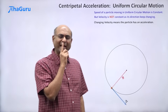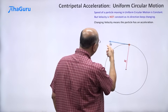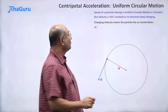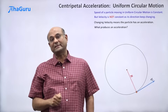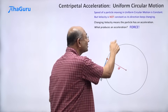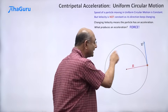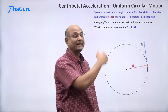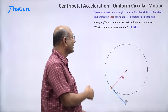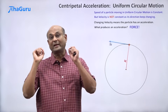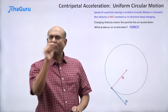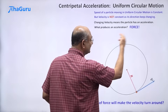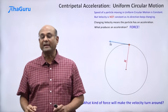Now, what is the direction of this acceleration? To understand what produces an acceleration, we should think about force — force produces an acceleration. This particle has a force acting on it. Without a force, it would have gone in a straight line. It is not going in a straight line; it is going in a circle. So it clearly has a force. We want to understand what kind of force will make the velocity turn around like this.